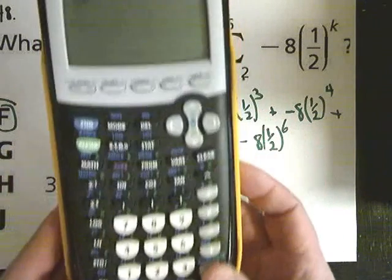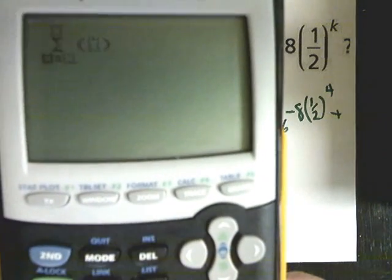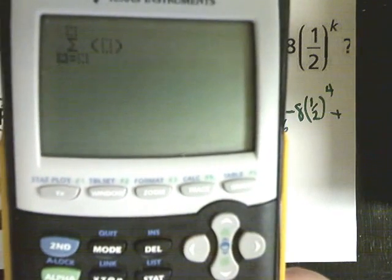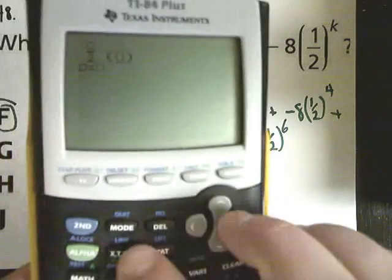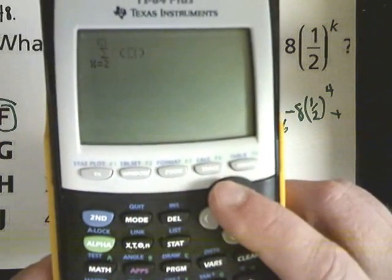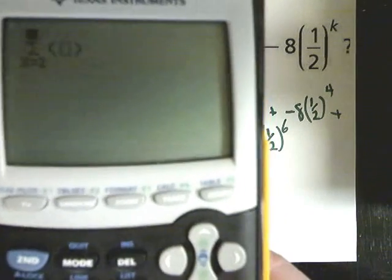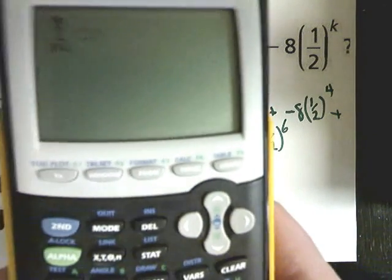So once you do that, it gives you perfect notation for summation. So in front of the equal sign, you need to tell it you want to use the variable x. Go over and hit 2, then 6.